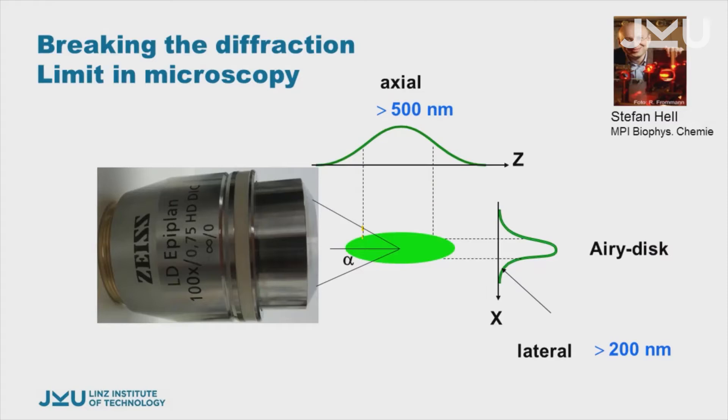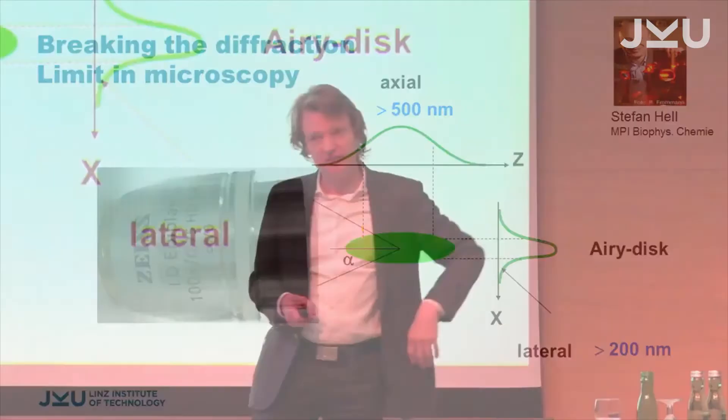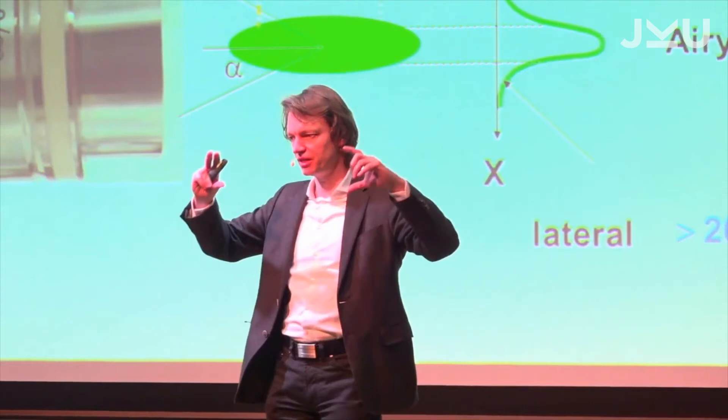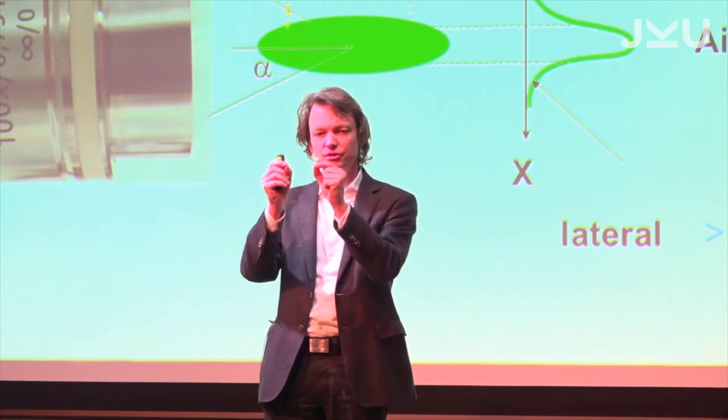His proposal was the following. You take the best objective lens you can get, you focus light, and that gives you this cigar — this green spot. All the molecules are excited inside the cigar. When you have a molecule sitting to the right and one to the left, both of them are excited. You don't know which of these two emits the photon — you cannot resolve them.